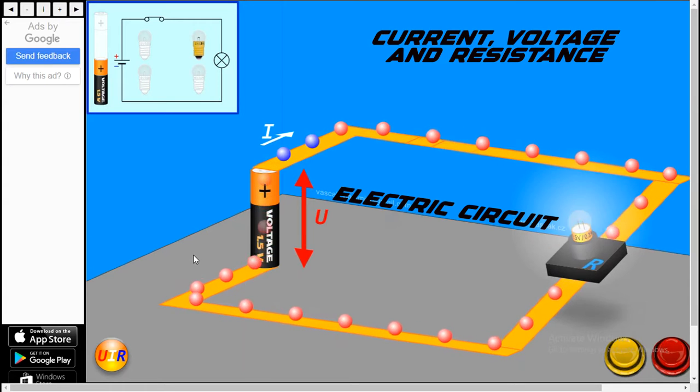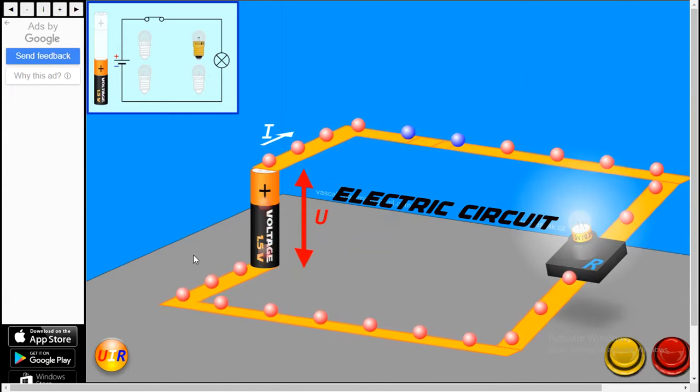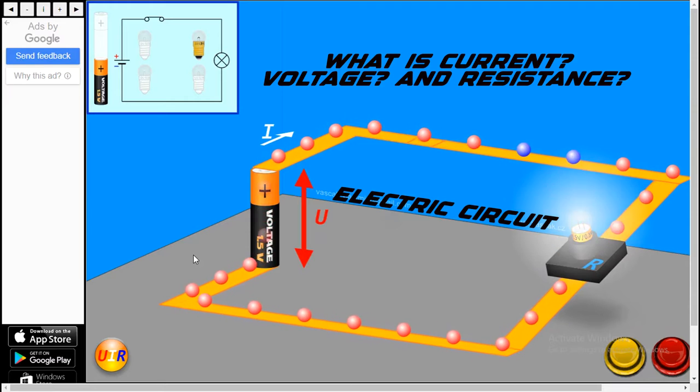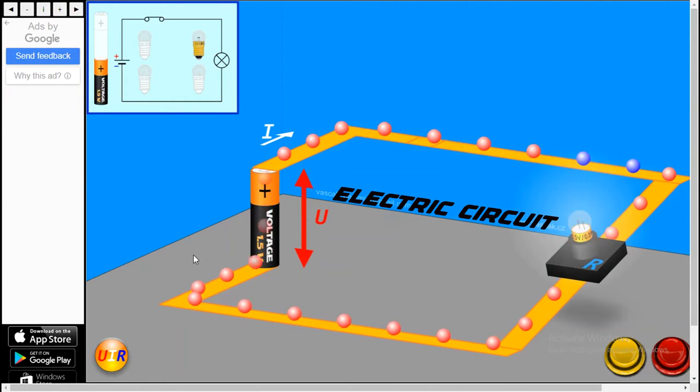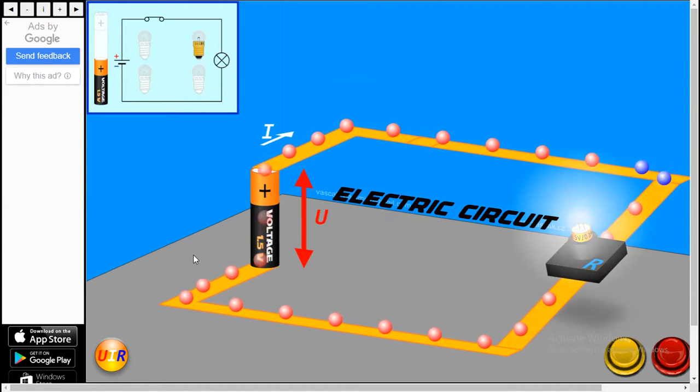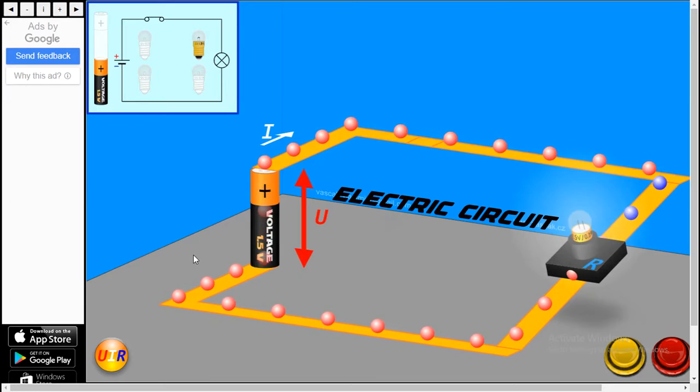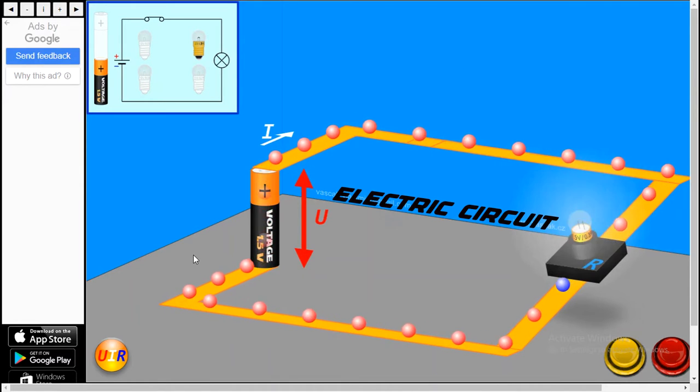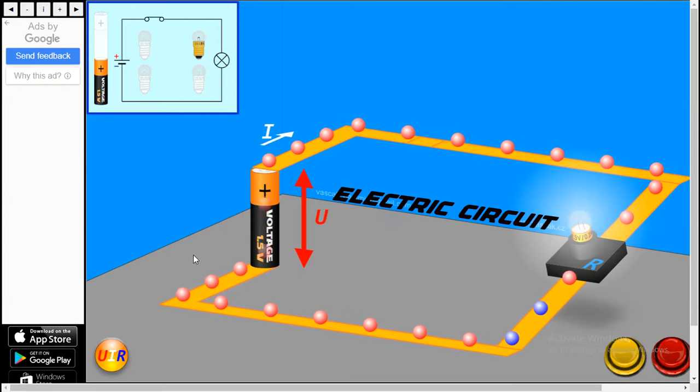That is current, voltage, and resistance. So what is current, what is voltage, and what is resistance? You can see on the video there is a small electric circuit I have placed here as a simulation. You can see some electrons are moving, some charges are moving from battery towards the bulb and it's going back to the battery. This is how it works.